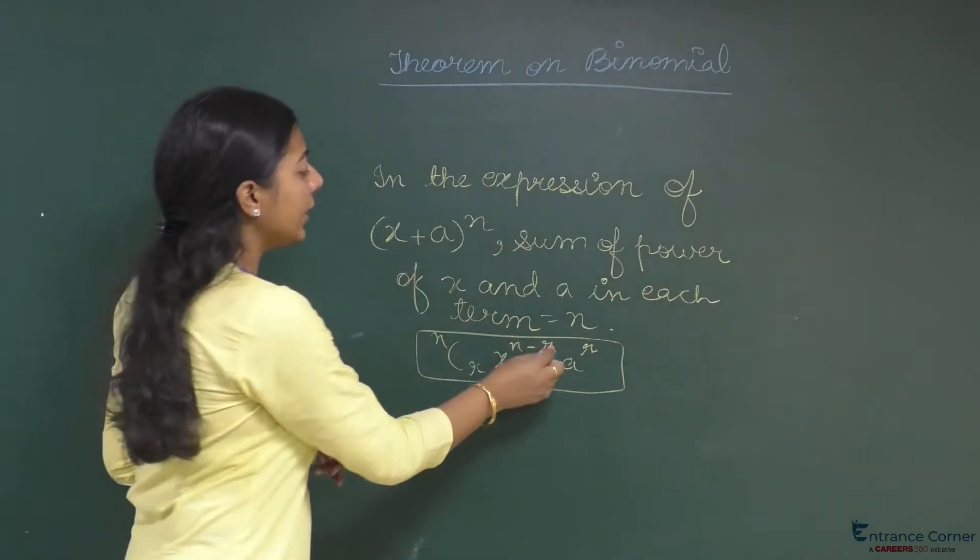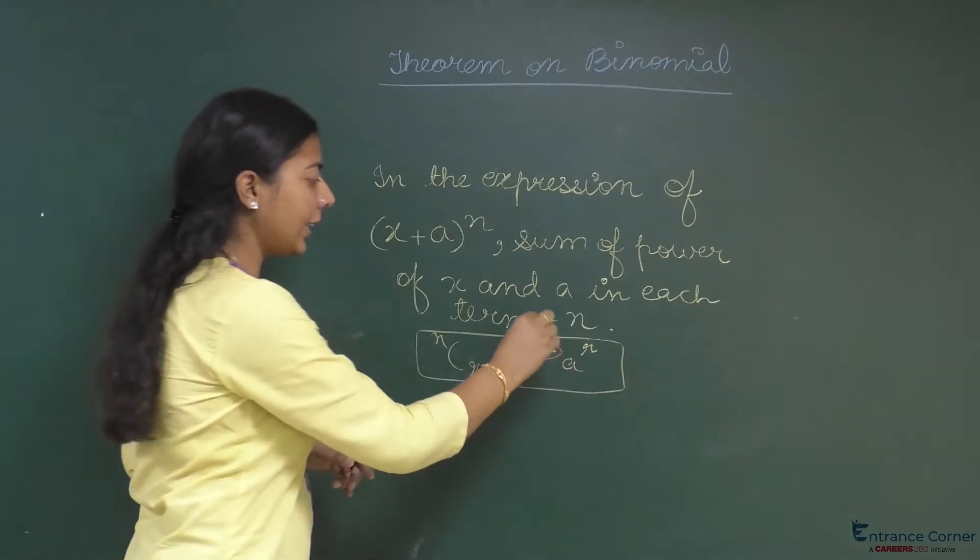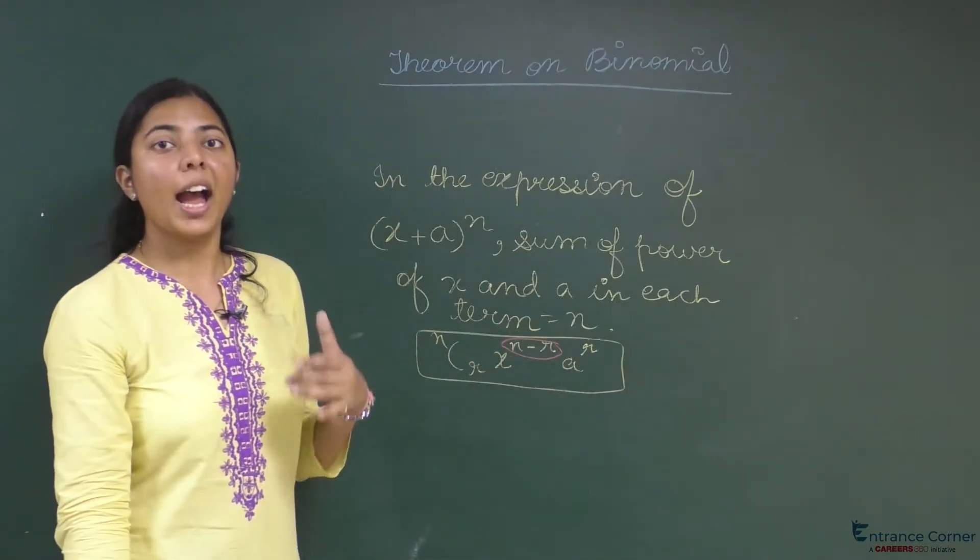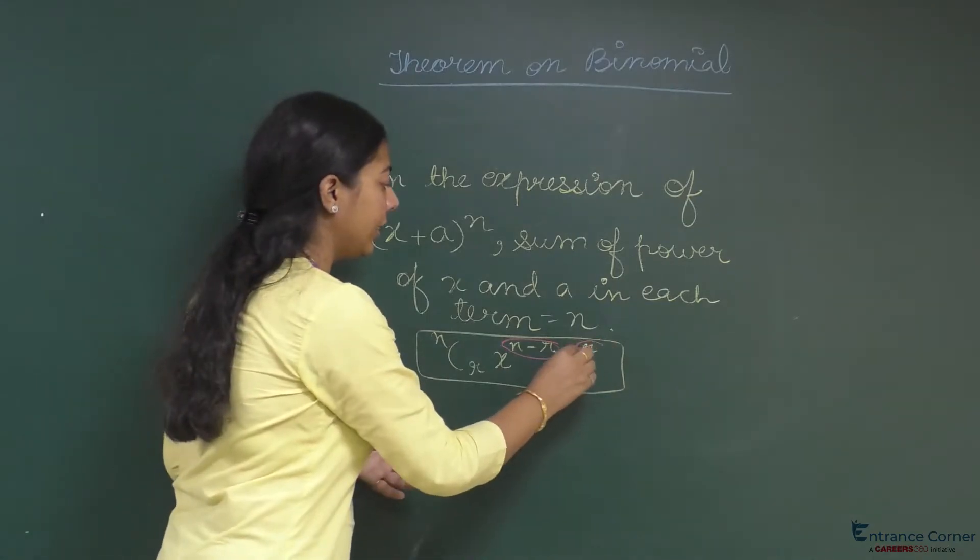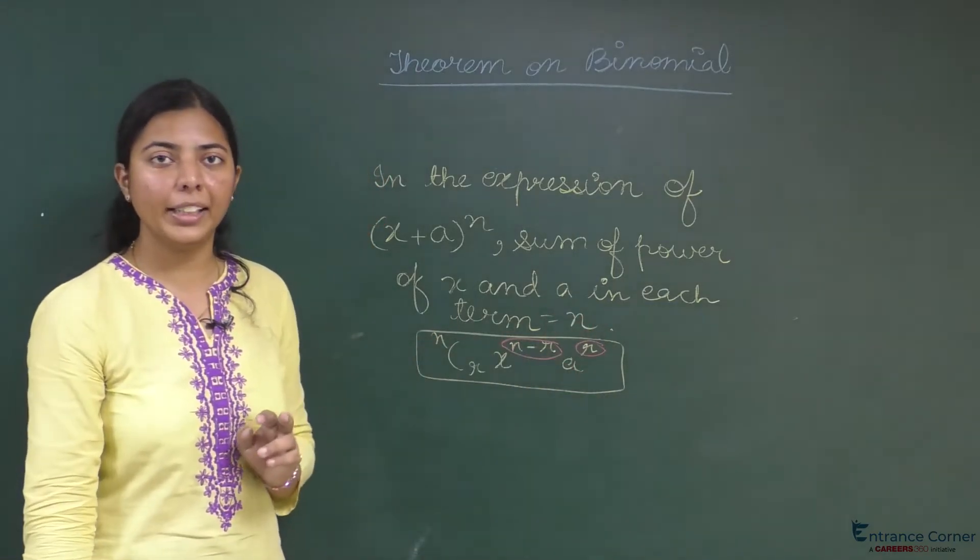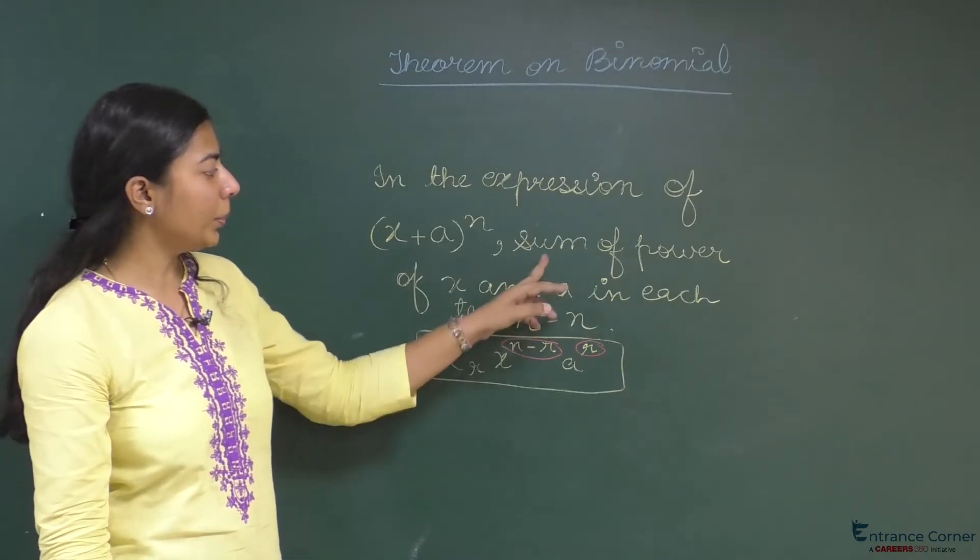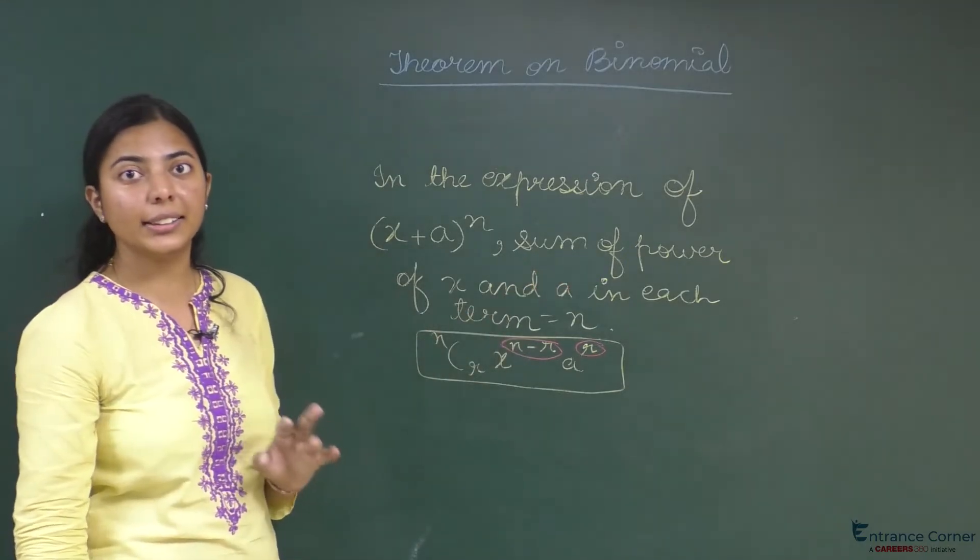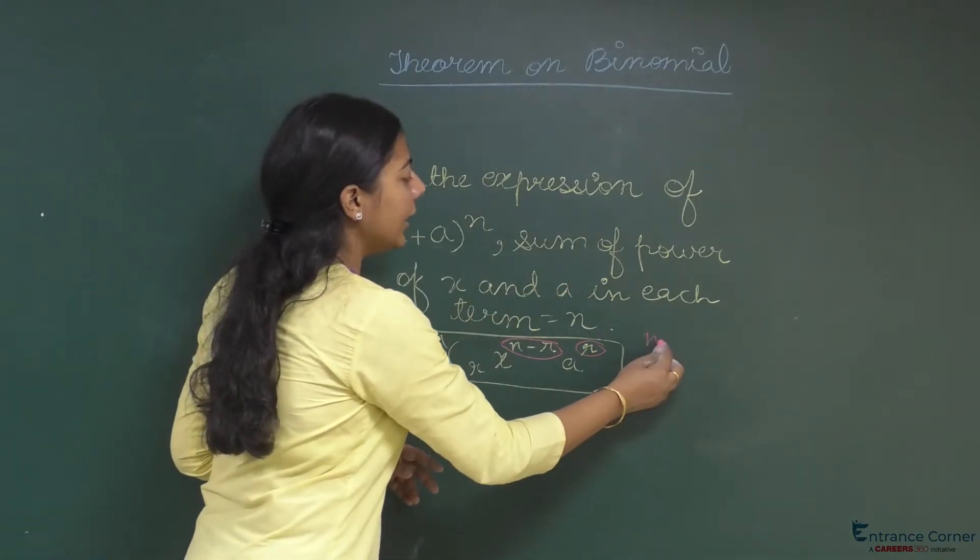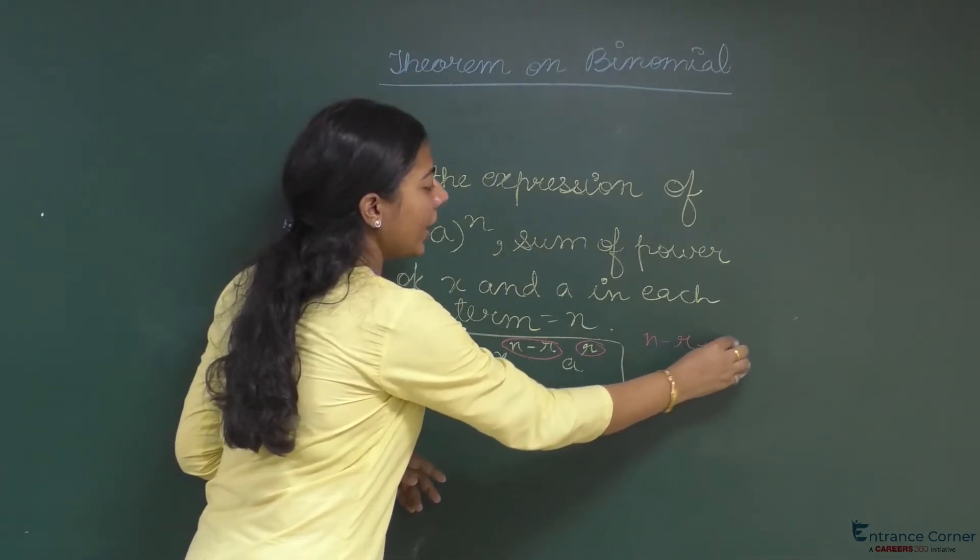Now, if I see the powers of x, that is I have to see this one and the power of a. These are the powers of x and a separately. I have to add the two because we are considering the sum. So, I obtain n minus r plus r.